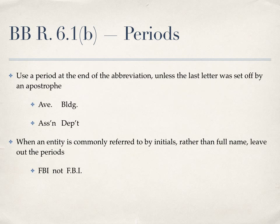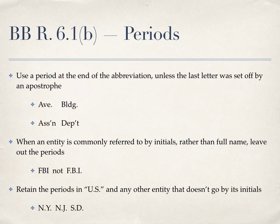When an entity is known by its initials, you can leave out the periods. For example, the FBI is known by its acronym, so we can omit the periods when we write it. But you should retain the periods in U.S. and retain the periods for any other abbreviations of an entity that does not go by its initials. For example, New Jersey is abbreviated N.J. but is not known as NJ, so you would retain the periods. The same could be said for New York and South Dakota.